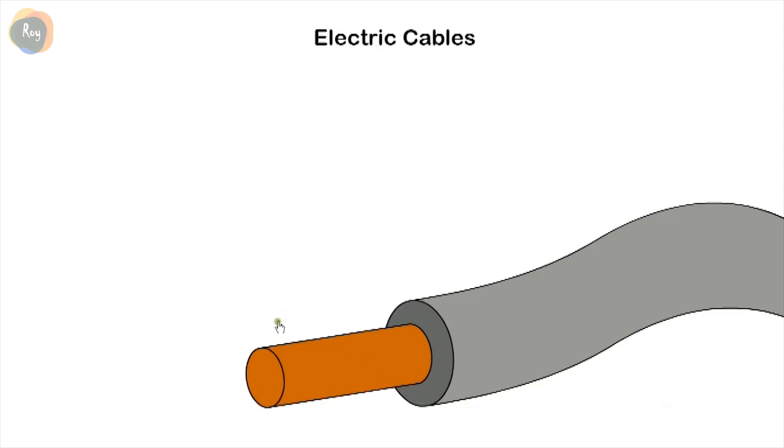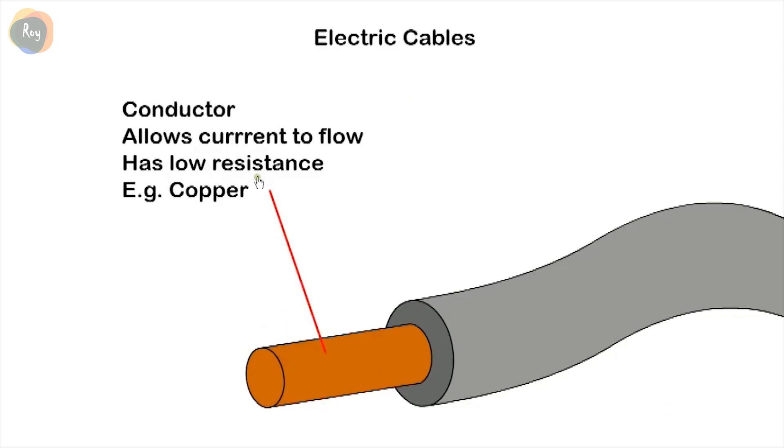The conductor of a cable is used to carry electrical current. It has low resistance and usually is made from copper. The insulation has high resistance and is usually made from plastic or PVC.